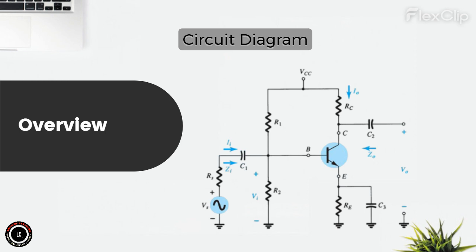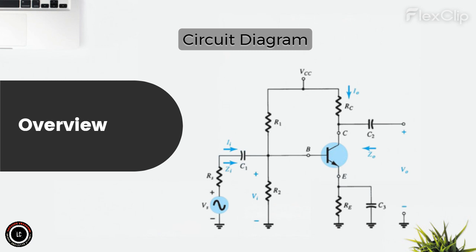Amplification stage — transistor, NPN BJT: the heart of the amplifier, the NPN transistor amplifies the input signal by controlling the collector current based on the base current modulation. Emitter stage — emitter resistor: placed in the emitter leg, the emitter resistor stabilizes the operating point and provides negative feedback. It enhances thermal stability and reduces distortion, contributing to better linearity.